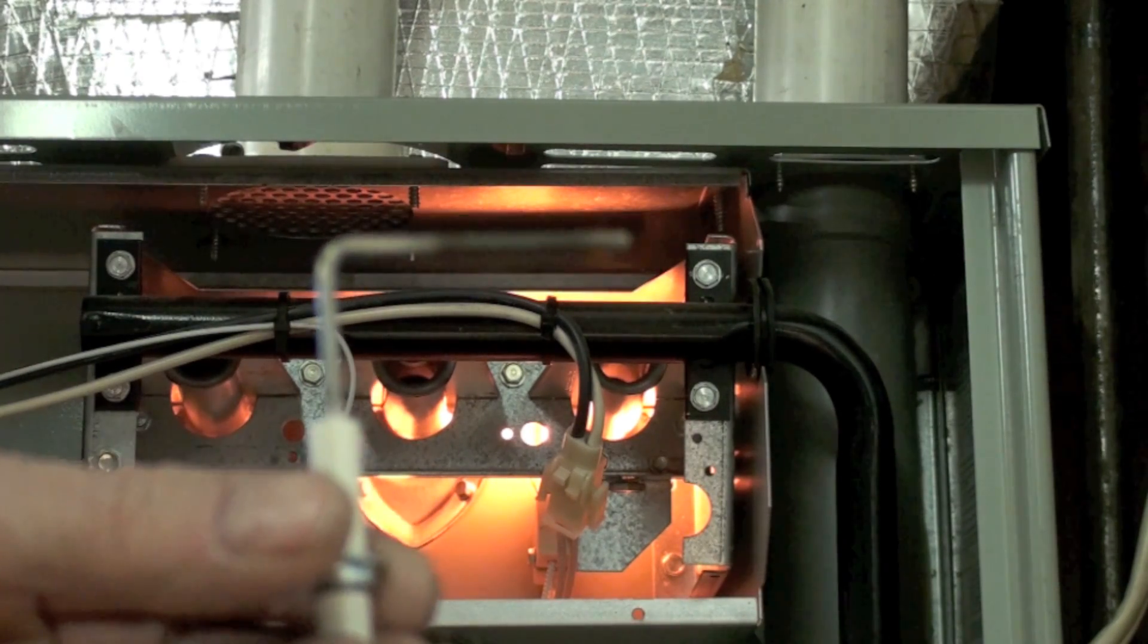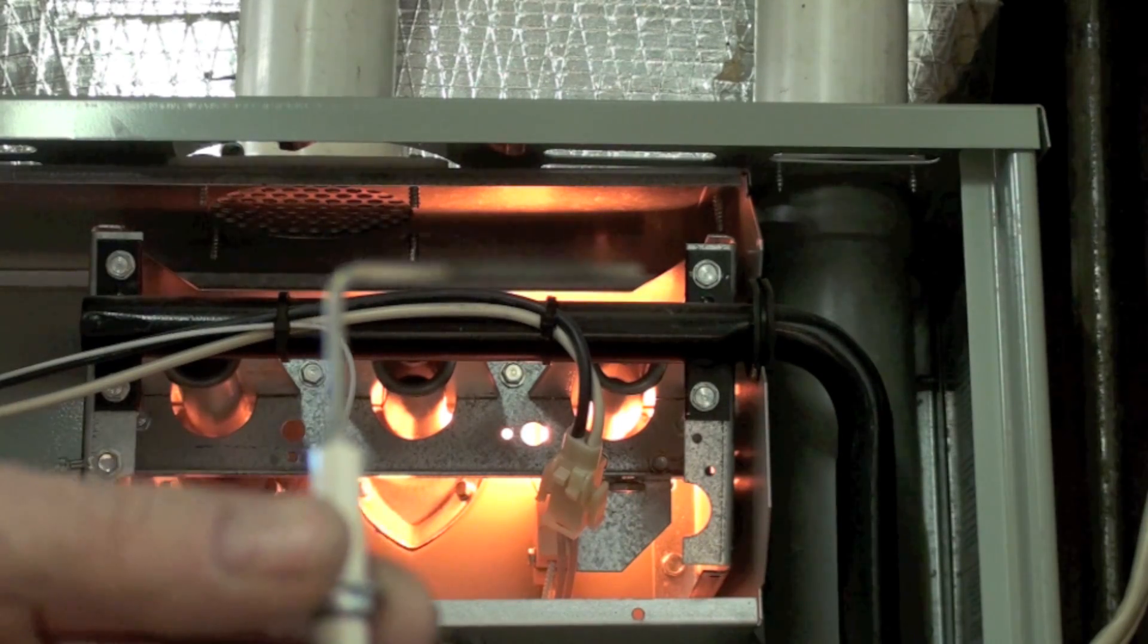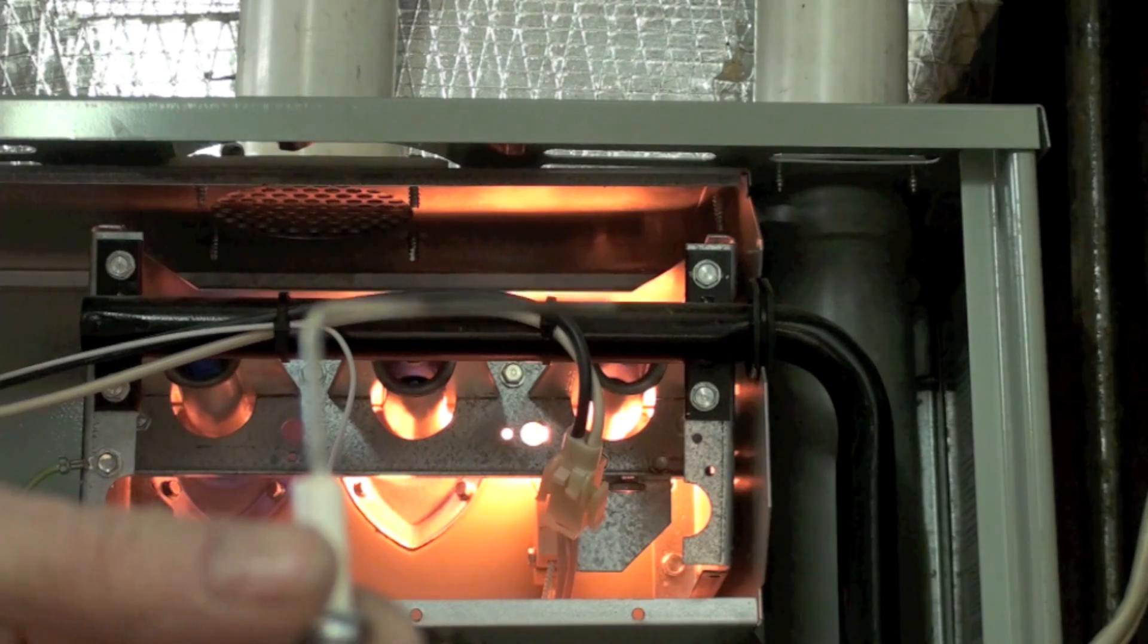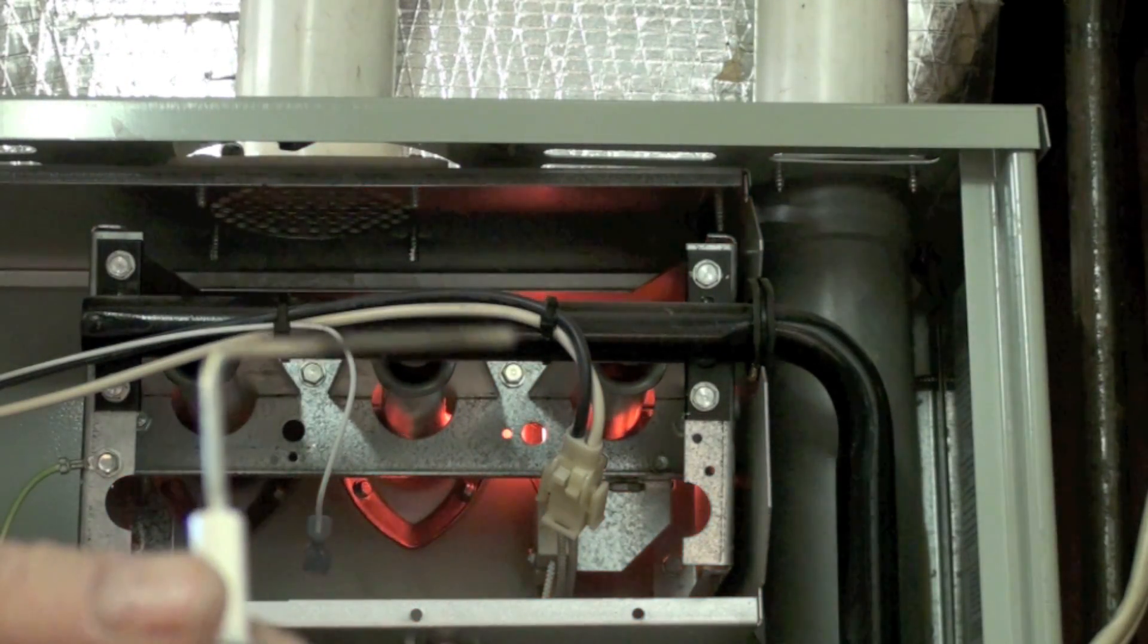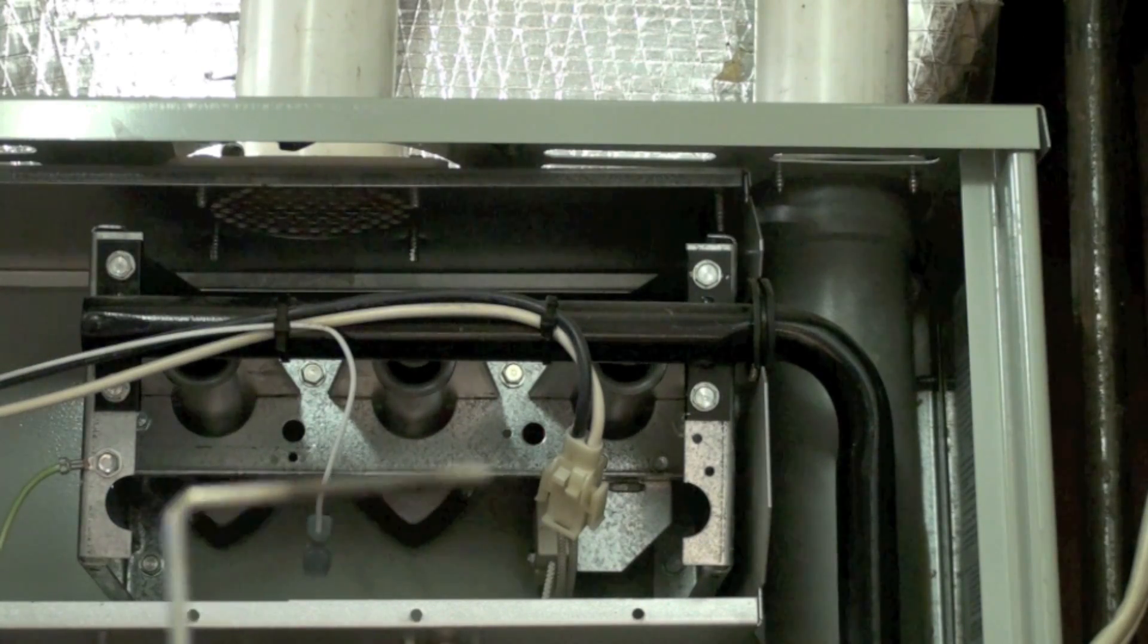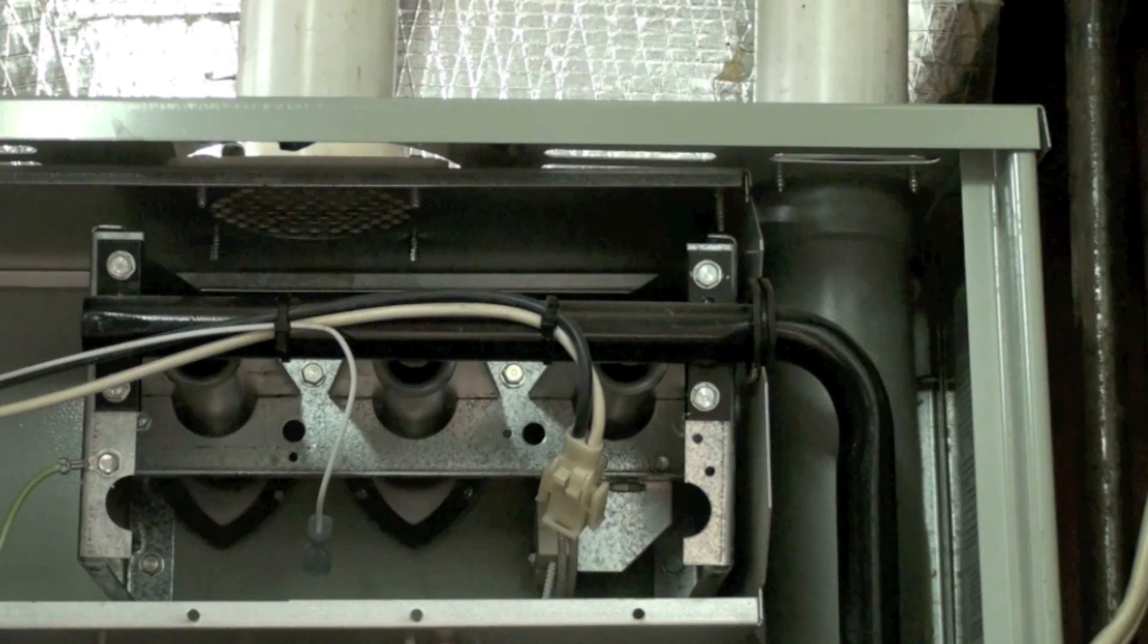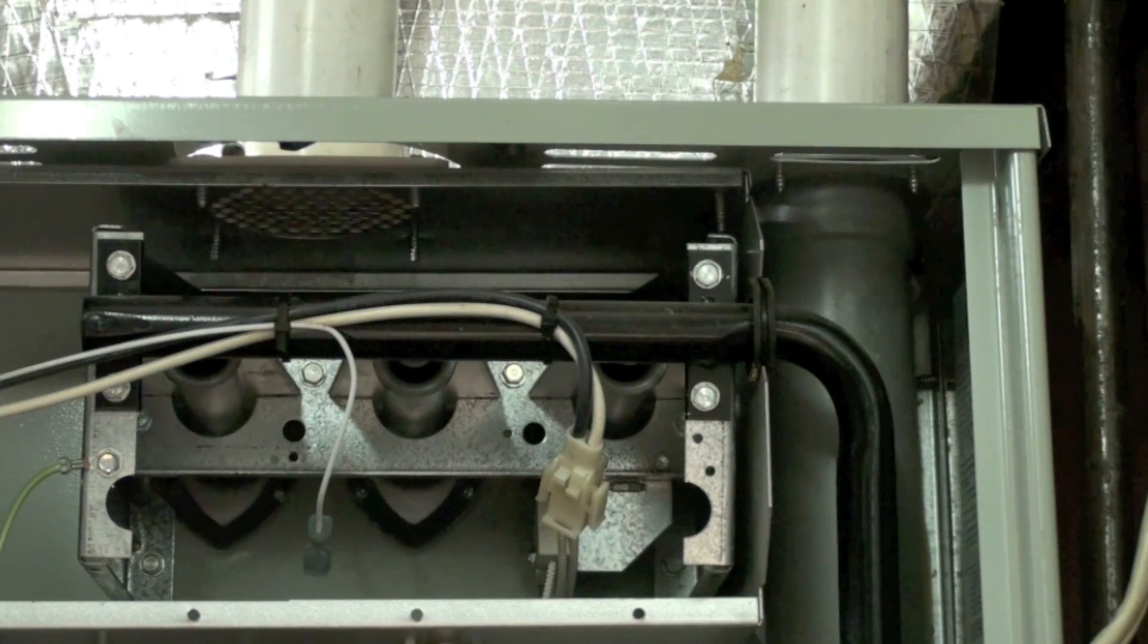It's trying one more time, not going to start because the flame rod's not in there. This can be cleaned with steel wool, sandpaper, whatever you want to use. I would not be too aggressive on this thing because the stainless steel does actually have a kind of chrome coating on it. Don't be too aggressive but don't be too afraid of it.